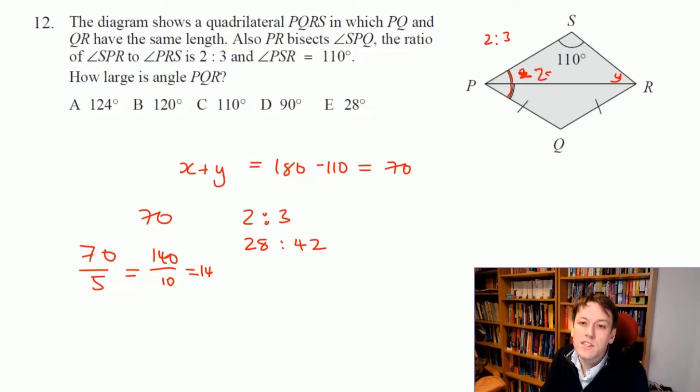Now because we said earlier that PR bisects the angle SPQ, that means that these two are equal. So this one is also 28.